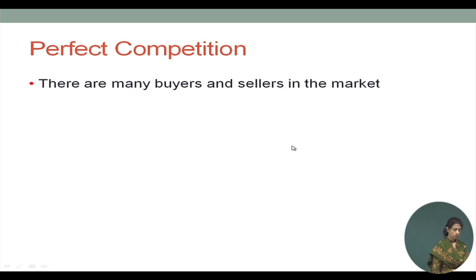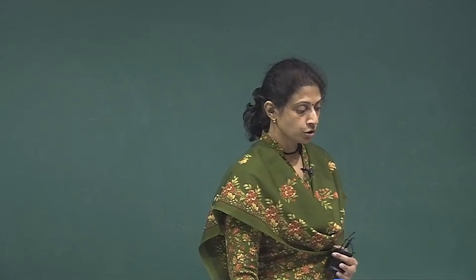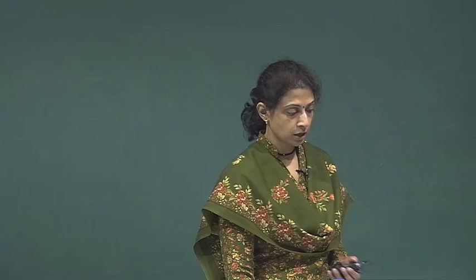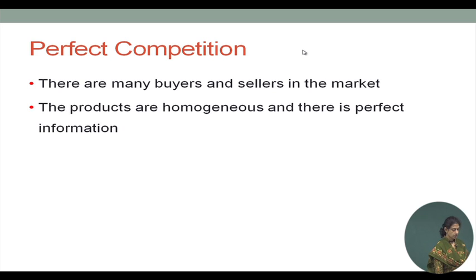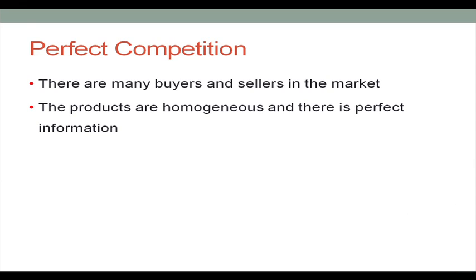These are the assumptions of perfect competition, which we also discussed in the previous module when we talked about market structures. There are many buyers and sellers in the market. The products are homogeneous, and there is perfect information. Why perfect information? Because products can be homogeneous, but that would not mean anything unless the buyer is aware of the fact that the products are homogeneous.